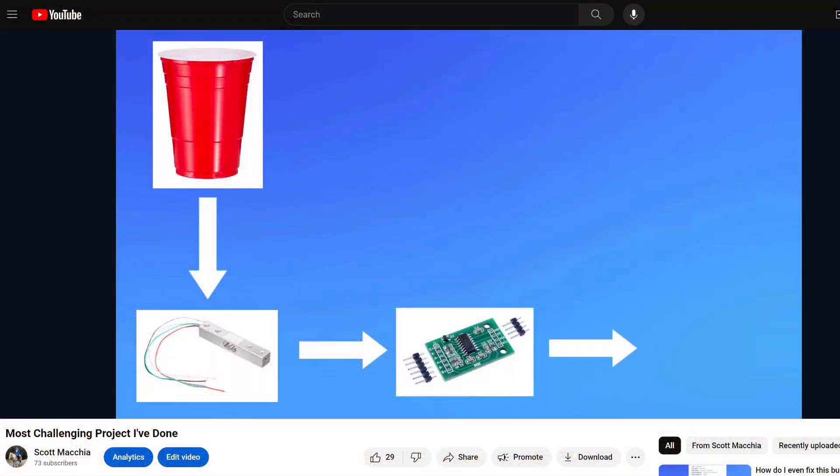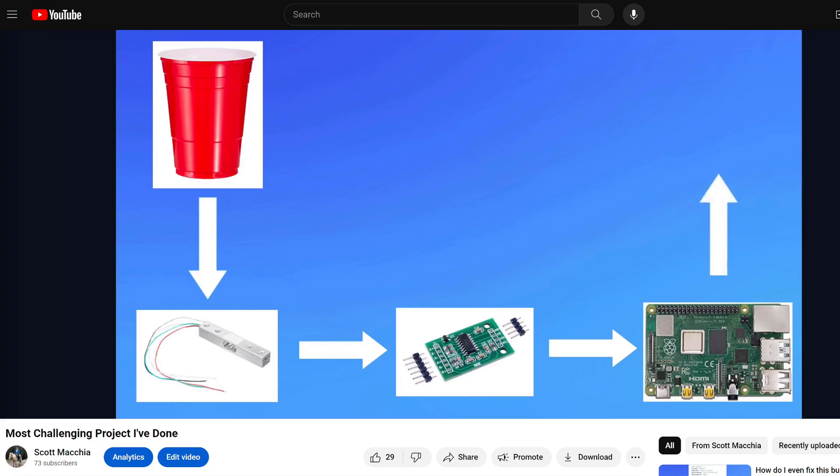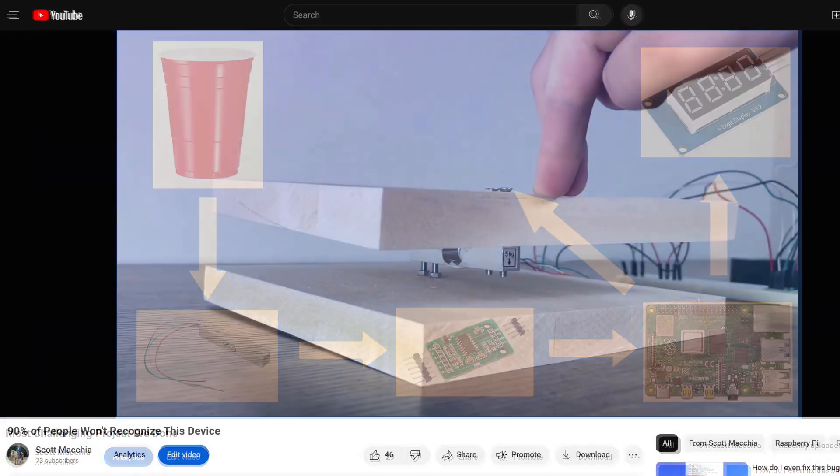The end goal of this project series is to construct an automated beer pong table with LED lights and a scoreboard. In the last episode,